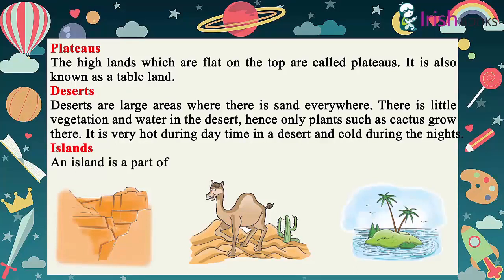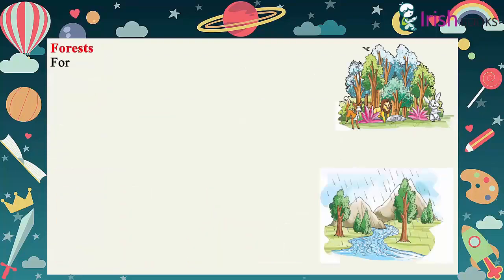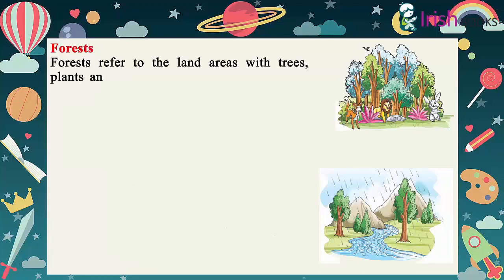An island is a part of land surrounded by water on all sides. Forests refer to the land areas with trees, plants and animals. Many people depend on forests for their livelihood.